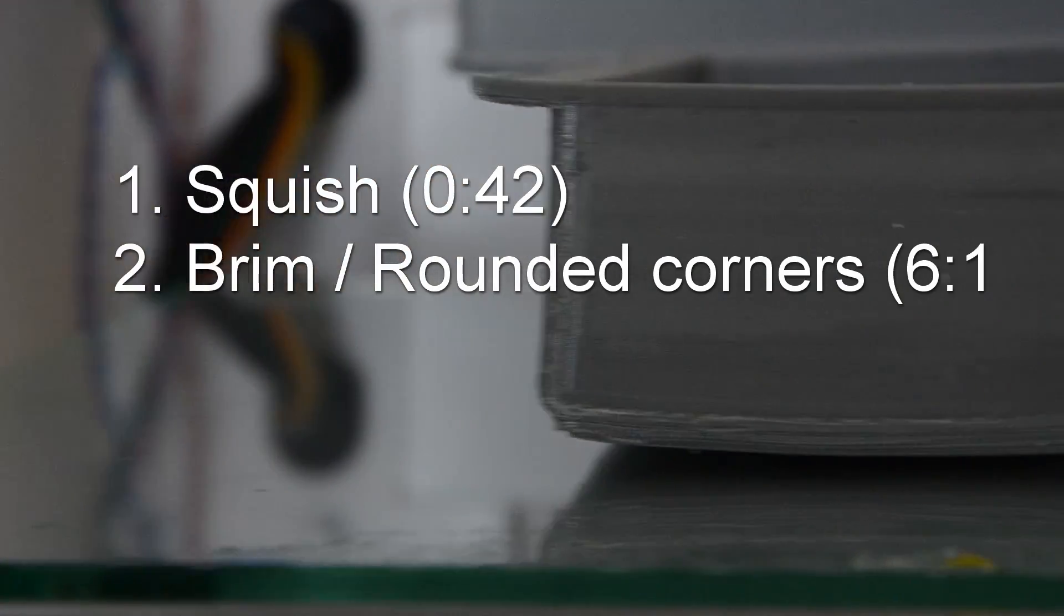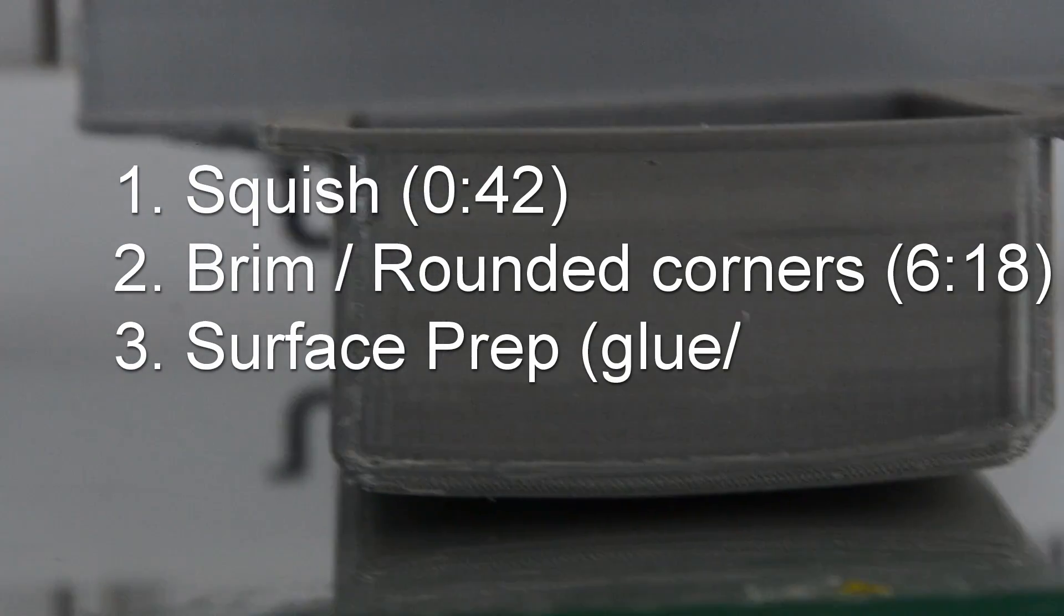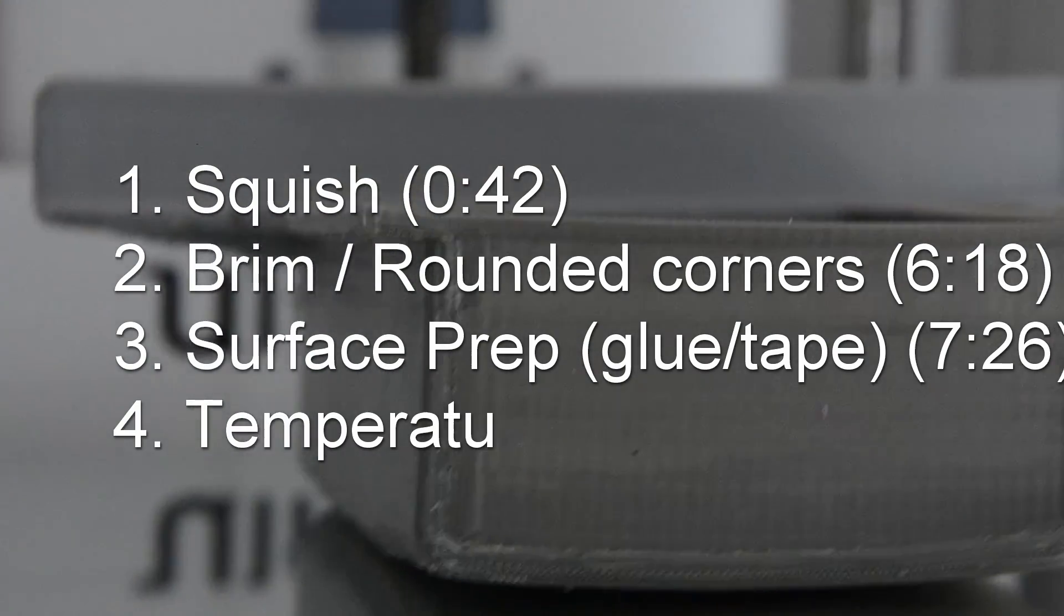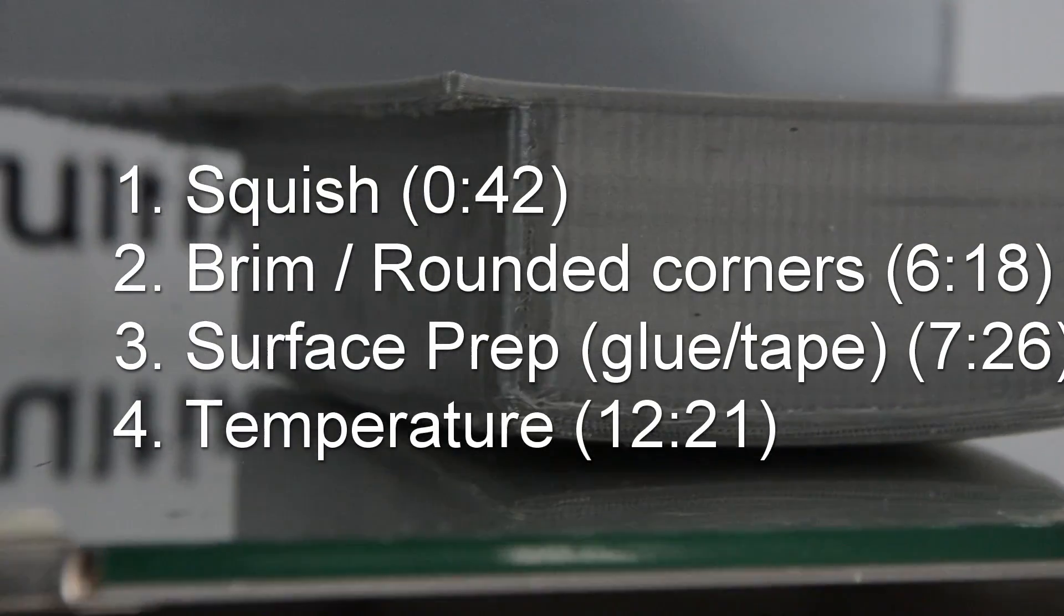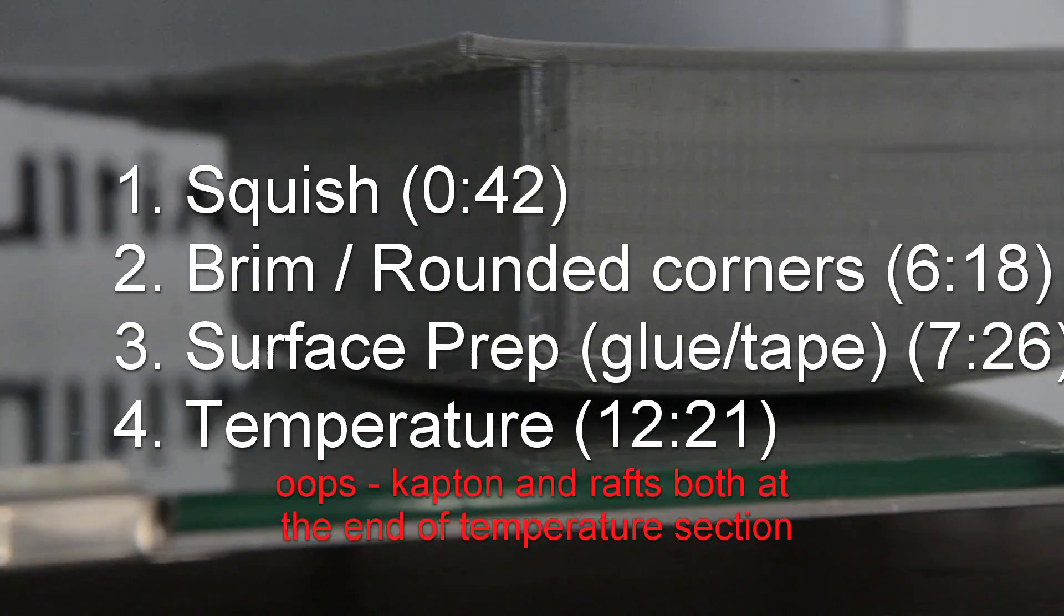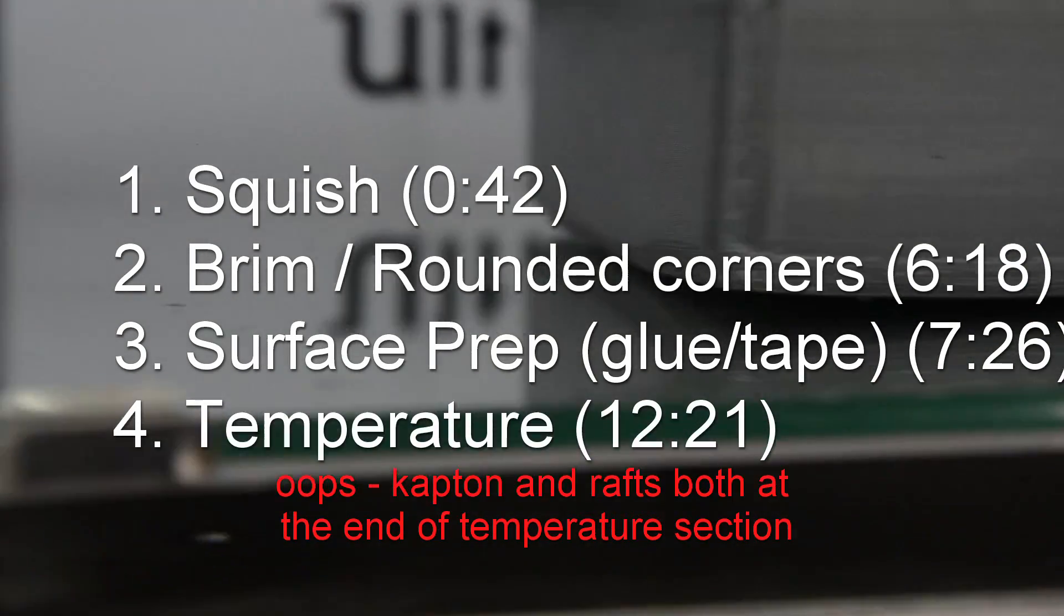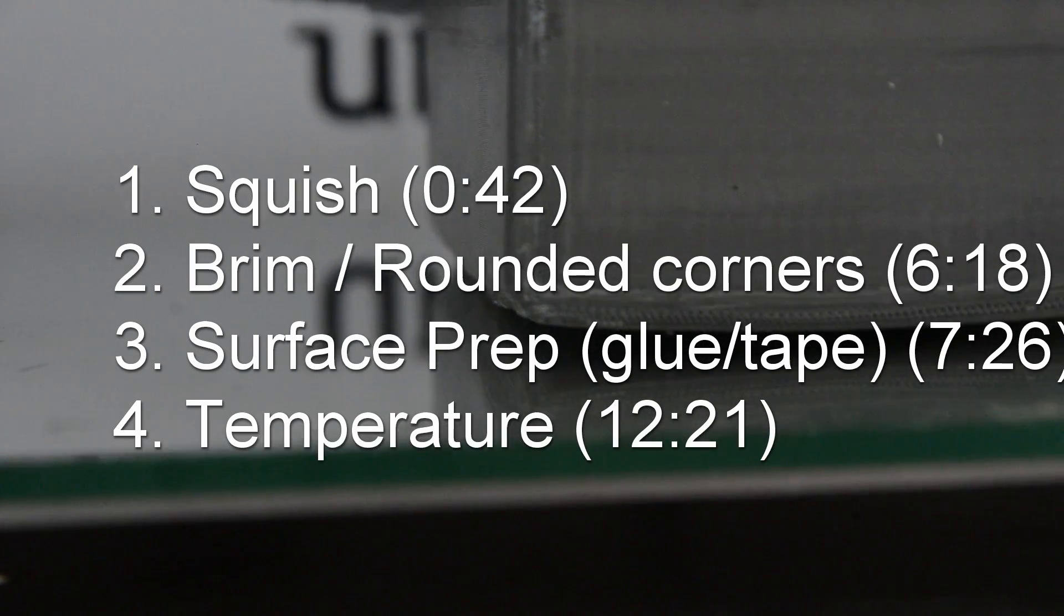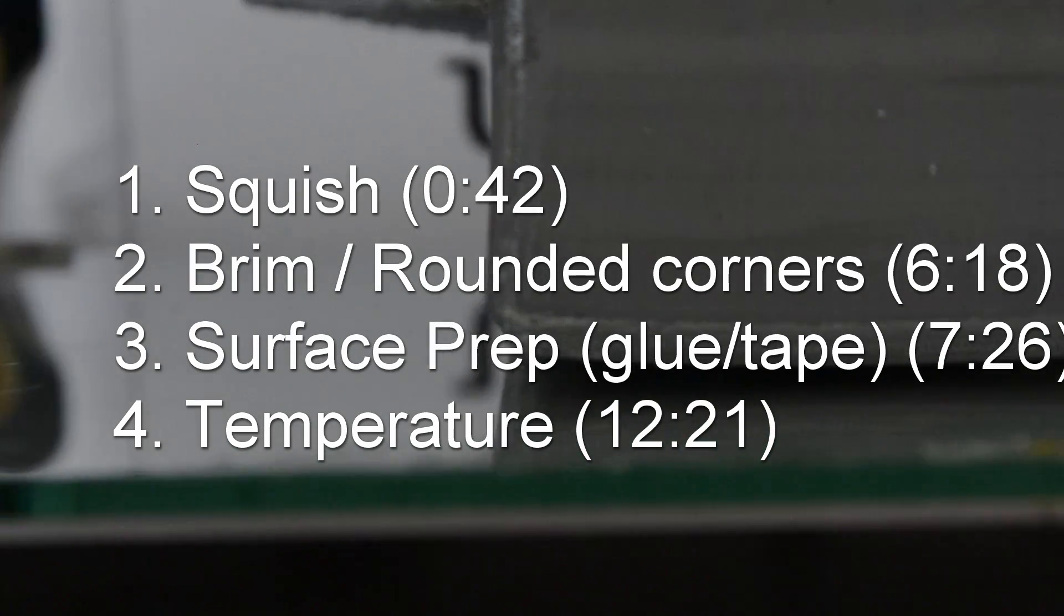The four basic techniques are squish, rounded corners or brim, surface prep, and temperature. I'll also talk about why corners lift in the brim section and historical techniques such as Kapton in the surface section and rafts in the temperature section. If you have a heated glass bed, call it squish, brim, glue, heat.